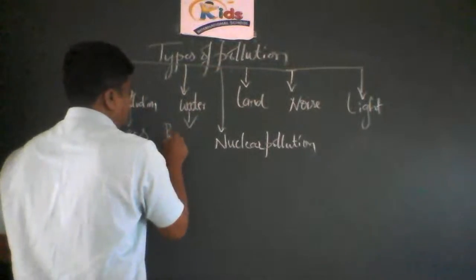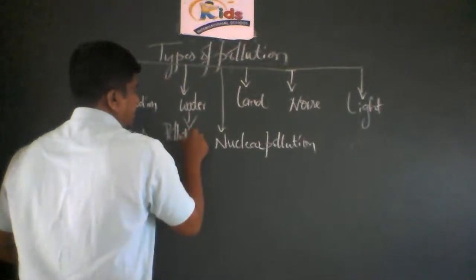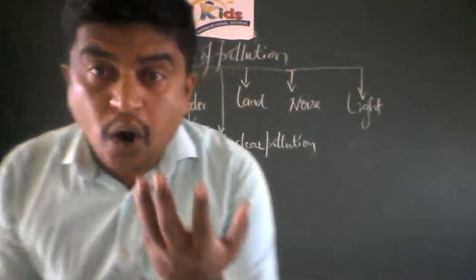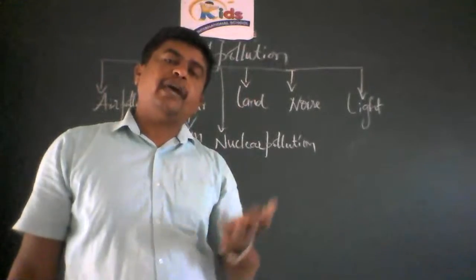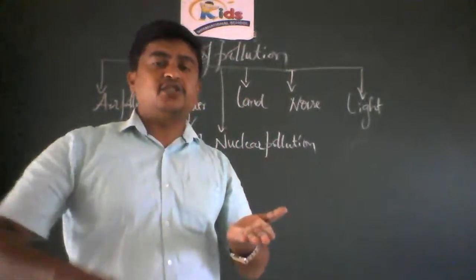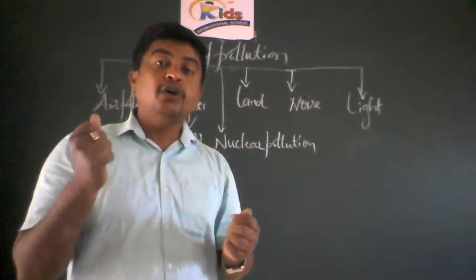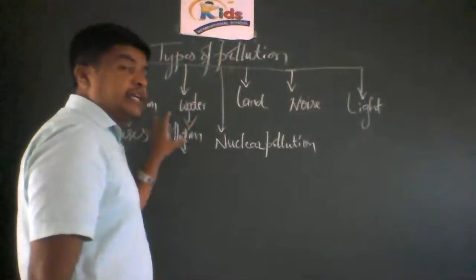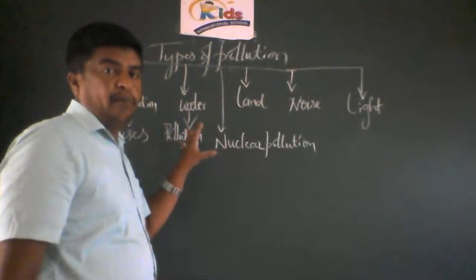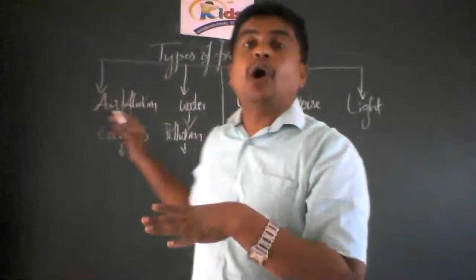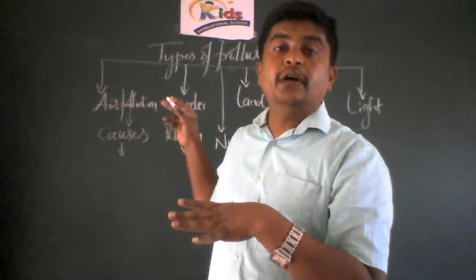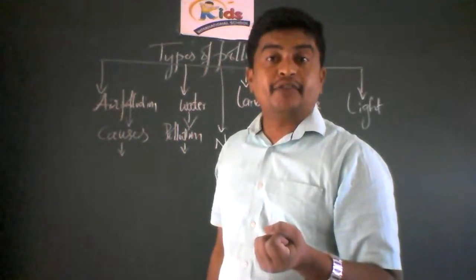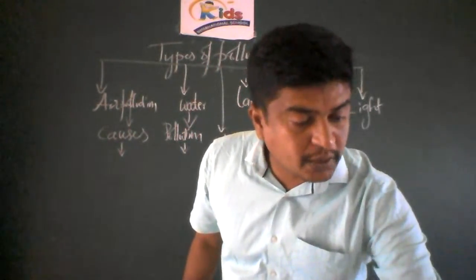Now we shall move towards the next type: water pollution. Water is like Amruta — without water, survival is too tough. So let us see how water pollution occurs and what diseases come from the water we drink. The water we drink should be pure and fresh.